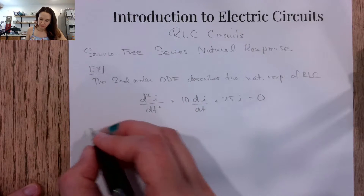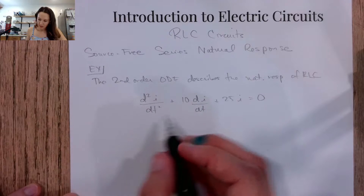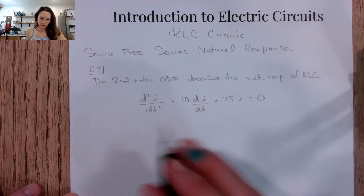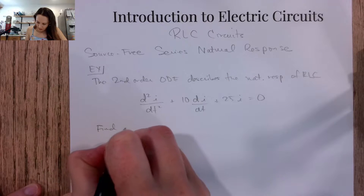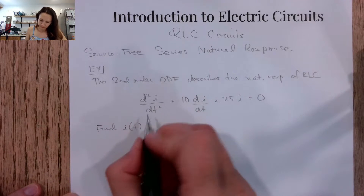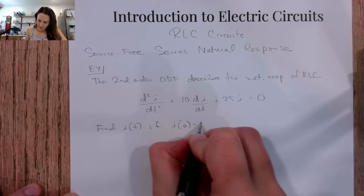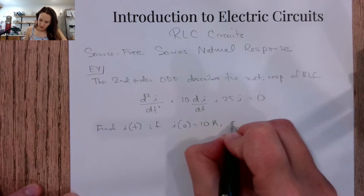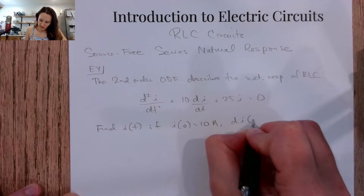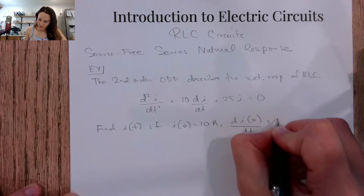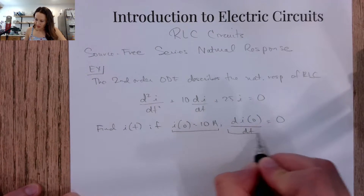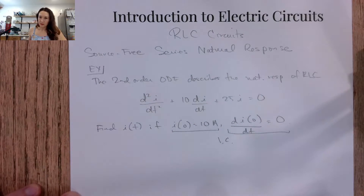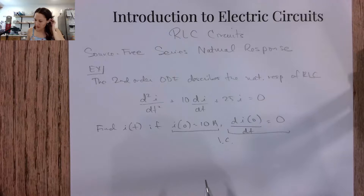Given this, they might ask us to find an equation for current for all time. Find i(t) if i(0) = 10 amps and di/dt at 0 = 0. These are our initial conditions, and we can use those to find the coefficients of our i(t) equation.